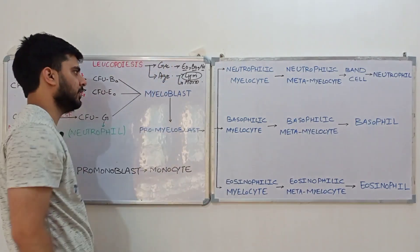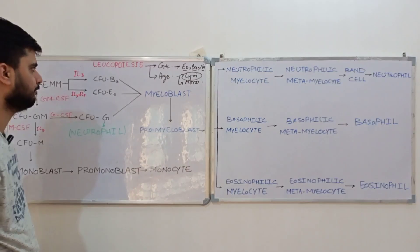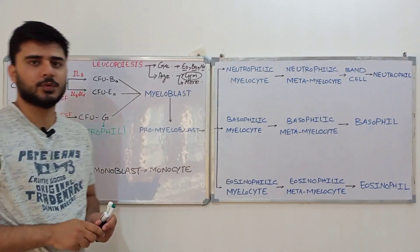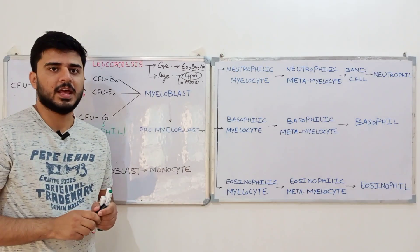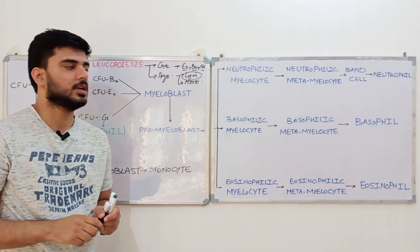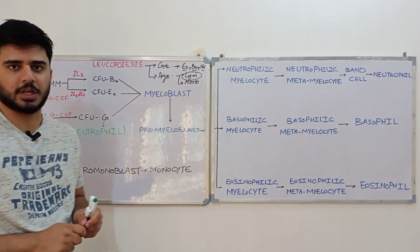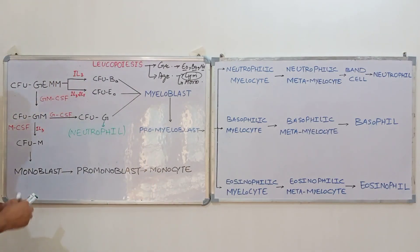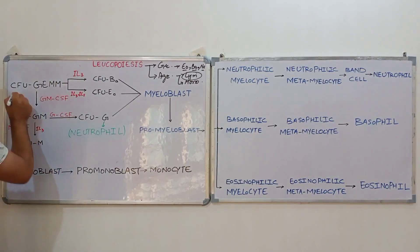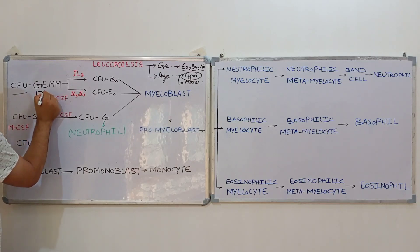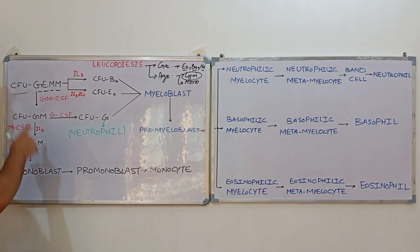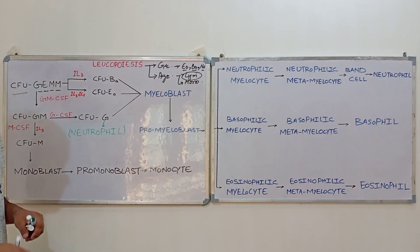In our previous lecture, we discussed that there is a pluripotent hematopoietic stem cell that divides and forms either the common myeloid progenitor or the common lymphoid progenitor. The common myeloid progenitor is also known as the colony forming unit — granulocyte, erythrocyte, monocyte, and megakaryocyte (CFU-GEMM).